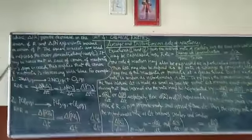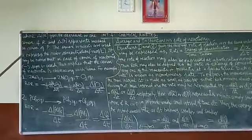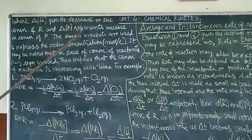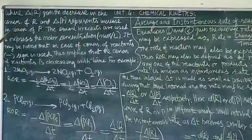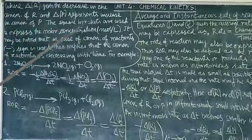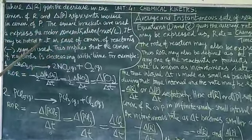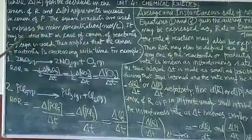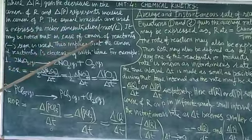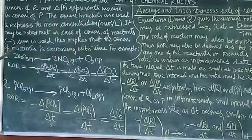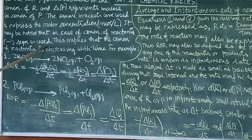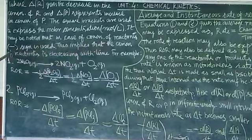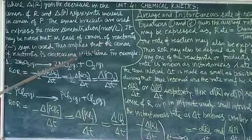Now we see here, where delta R is the decrease in the concentration of R and delta P represents increase in concentration of P. The square brackets are used to express the molar concentration, that is in moles per liter. It may be noted that in case of concentration of reactants, a minus sign is used — this implies that the concentration of reactants is decreasing with time.